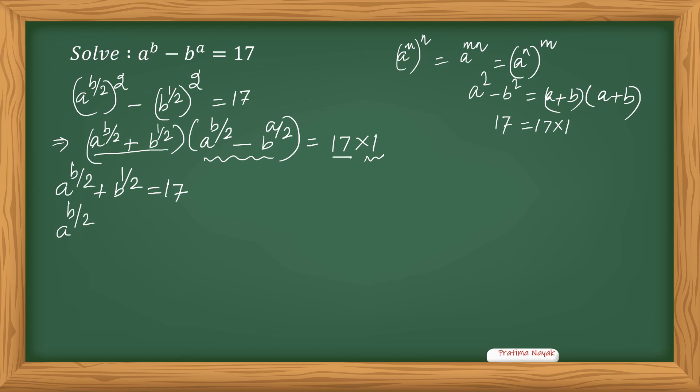a^(b/2) minus b^(a/2) equals 1. For the time being, I can take this as x, y also. So x plus y equals 17 and x minus y equals 1. I took a^(b/2) as x and b^(a/2) as y. I will solve it. 2 times x is 18, so x equals 9. And y equals 8.